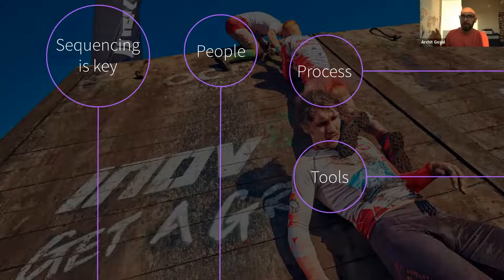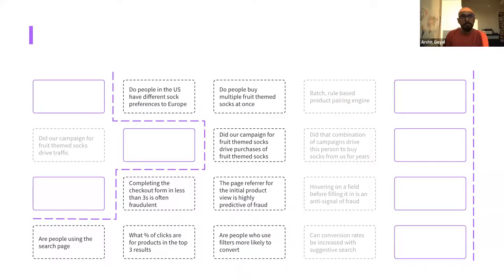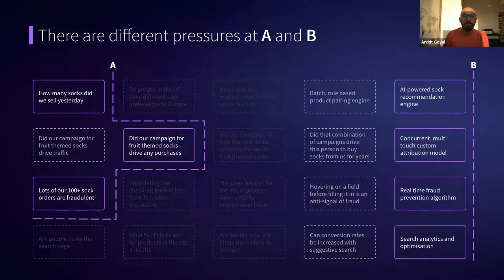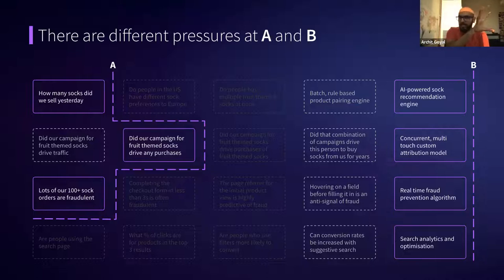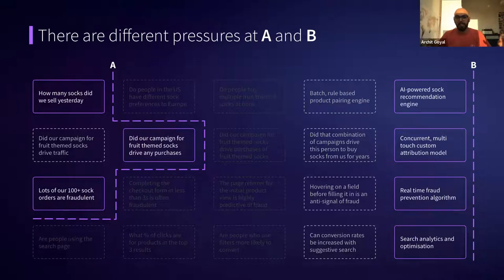The key that we've found is adapting the organisation to that change as you go through that journey. Think about it through a people, process, and tooling lens. An organisation that's answered the simple questions looks very different to one that has all of these things running in production with business criticality tied to them. There are very different pressures on the business at both stages. If you keep these two data maturities — point A and point B — in mind as we go through the next three slides, it will be helpful.